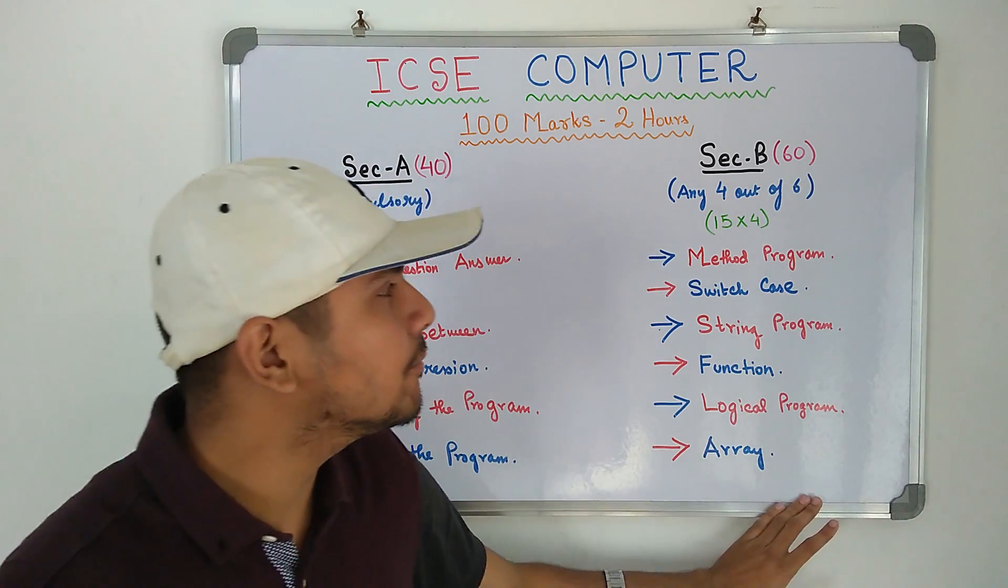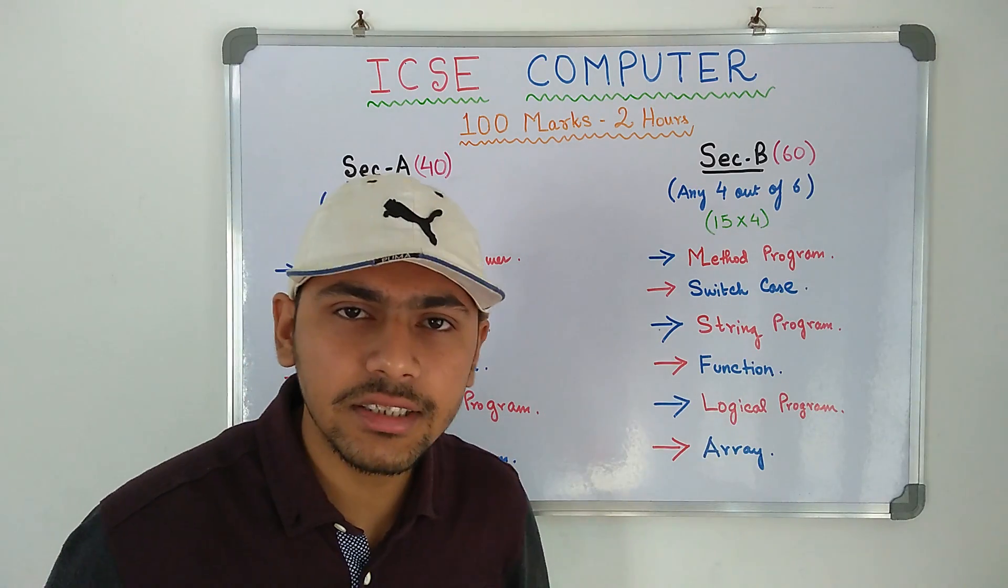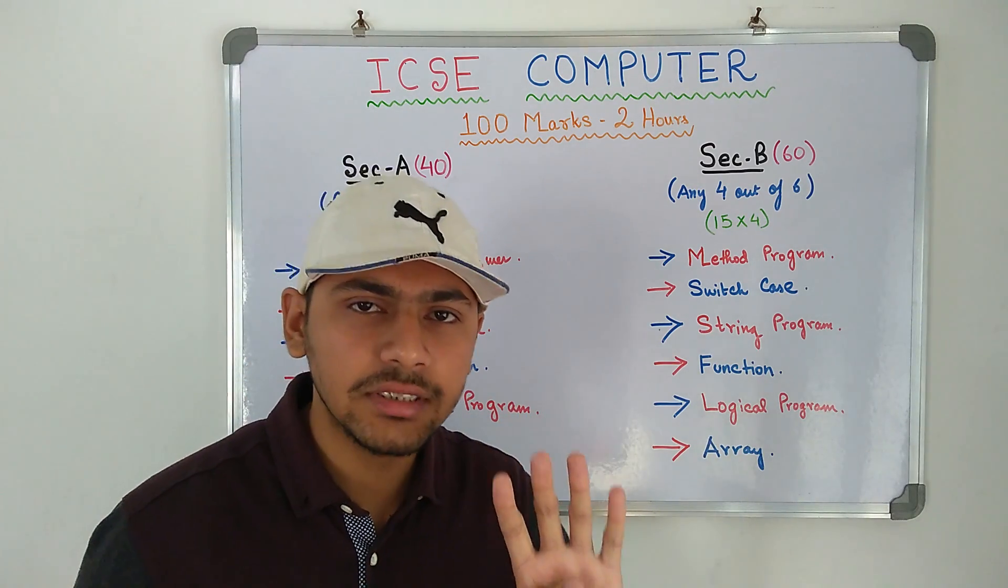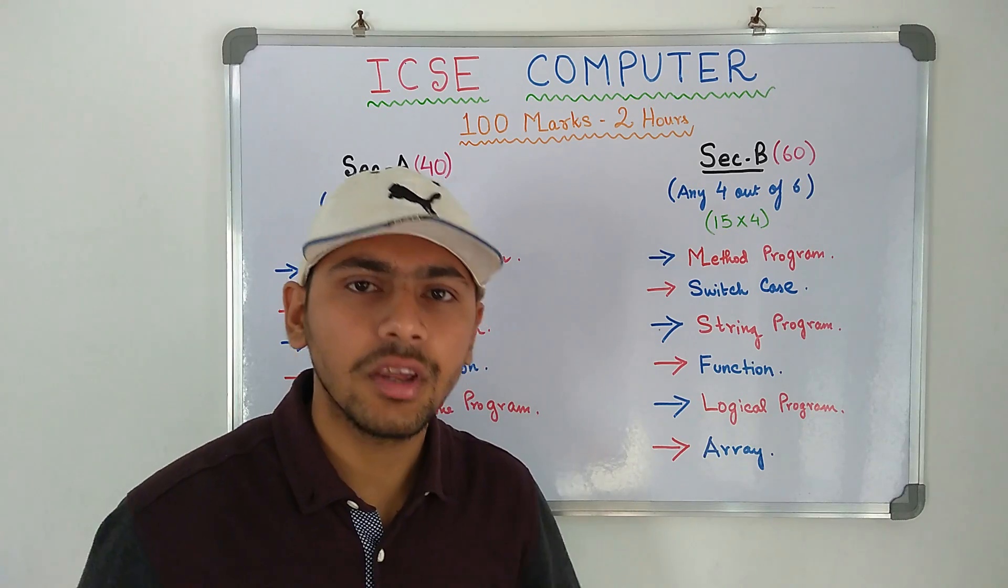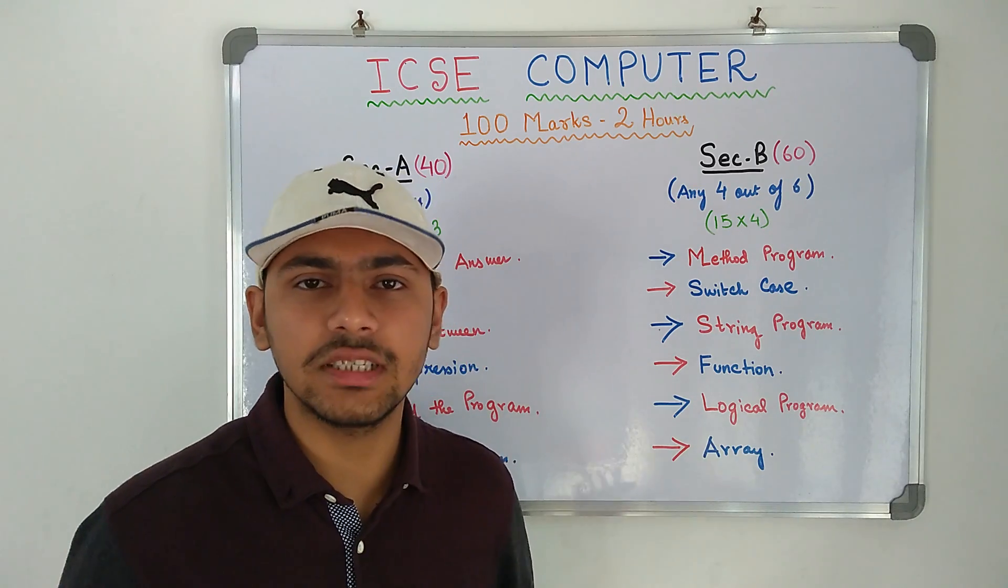We now move on to section B. Section B is a 60 mark section in which you have to attempt 4 programs out of the 6 that you get. 4 into 15 gives you 60 marks.